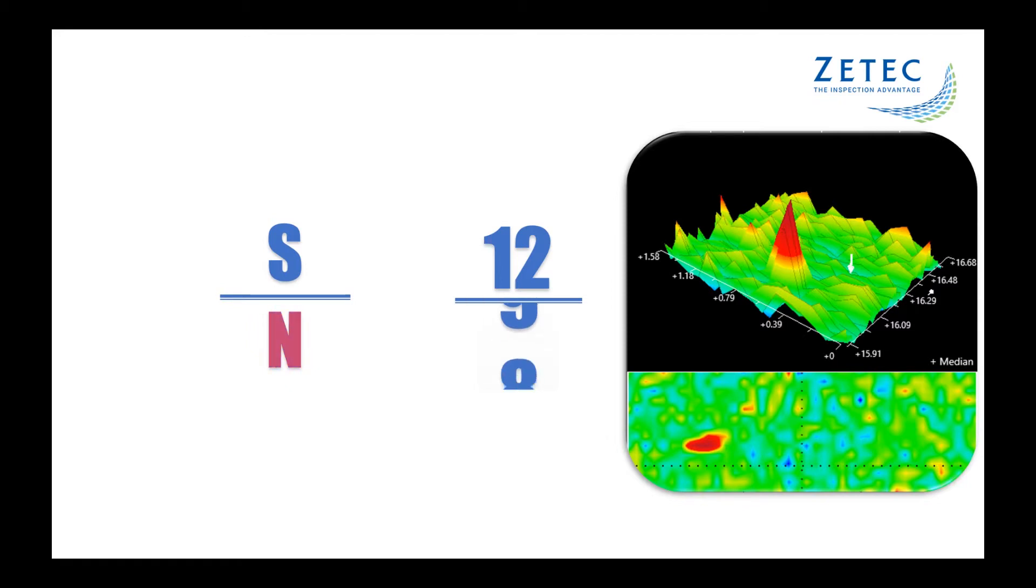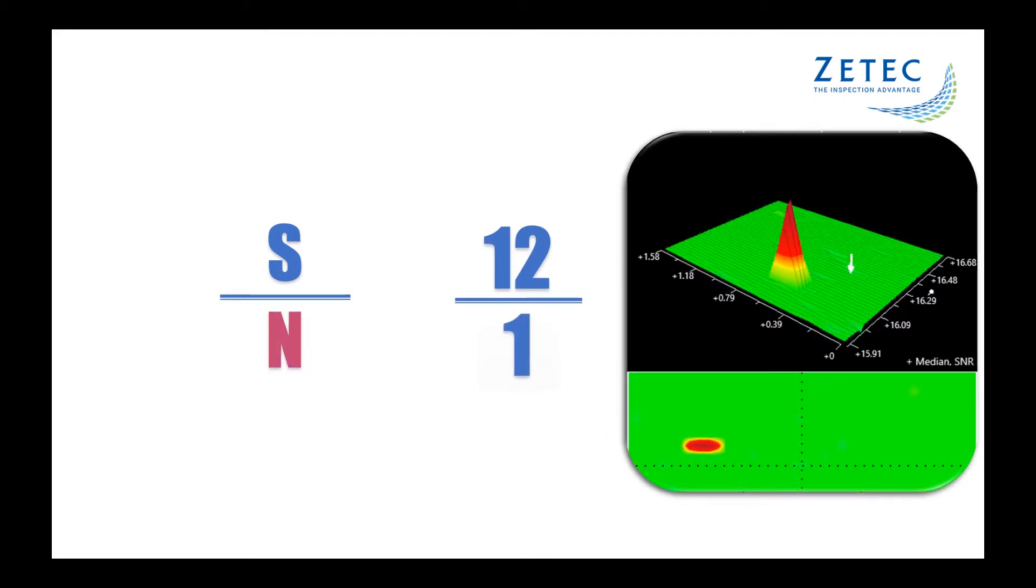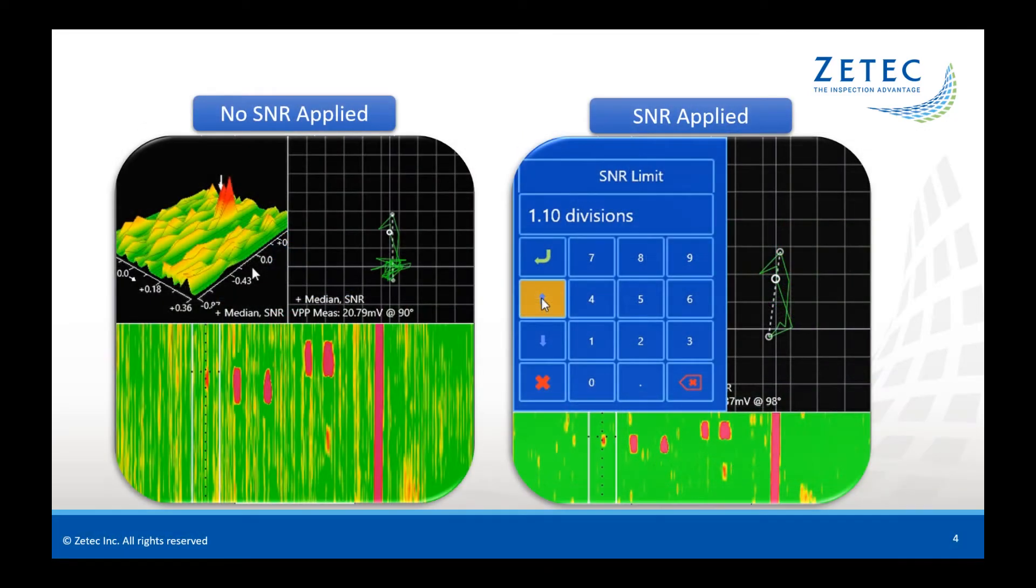But what if you could reduce the N part of the equation to give your SNR a boost? I'm going to give you a description of the SNR filter on the 21C. This powerful filter intelligently looks for and reduces the noise in the data without attenuating real signals of interest.